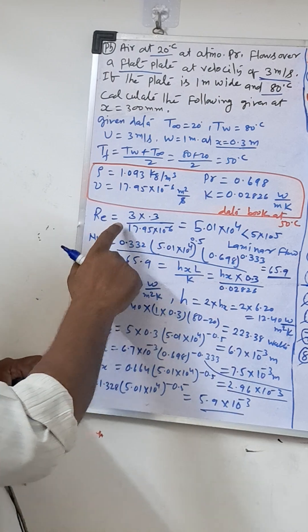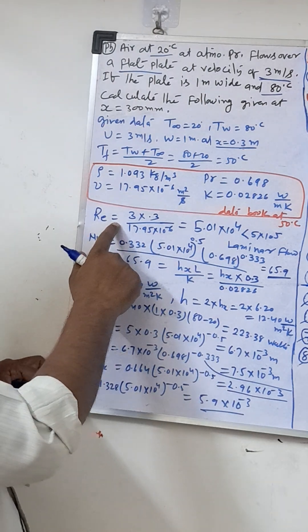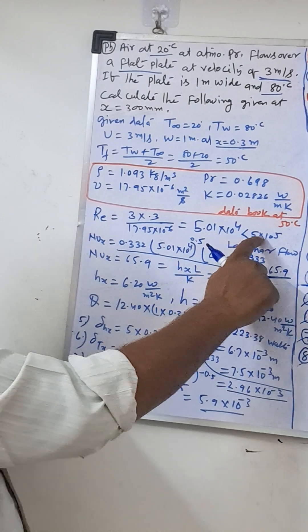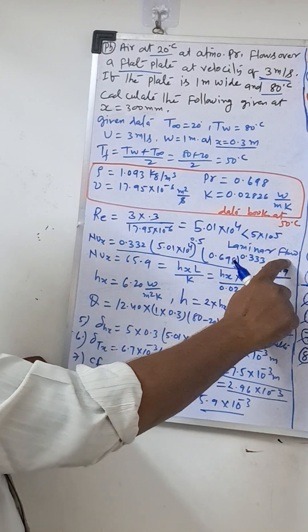Then we will check the status of the fluid from the Reynolds number. Formula will be UL by nu. So we will see the value less than 5×10^5 so laminar flow.